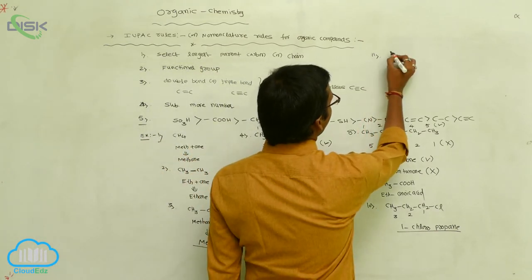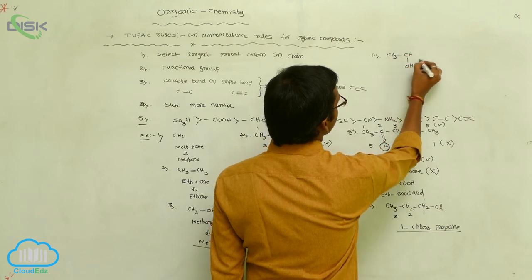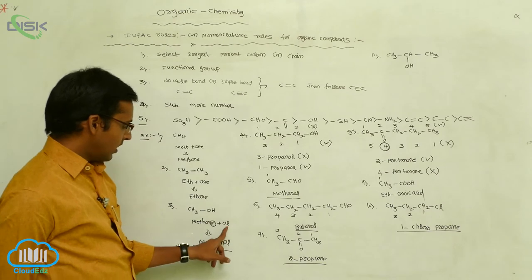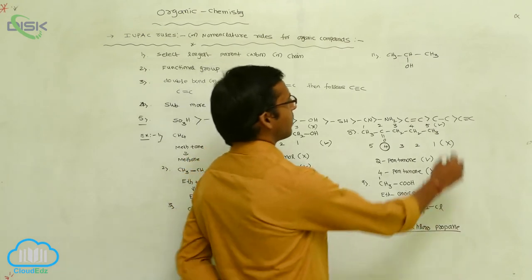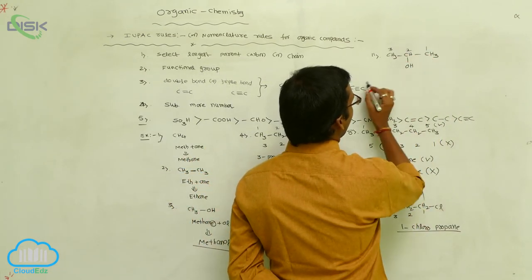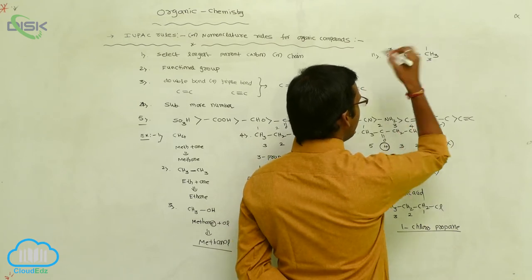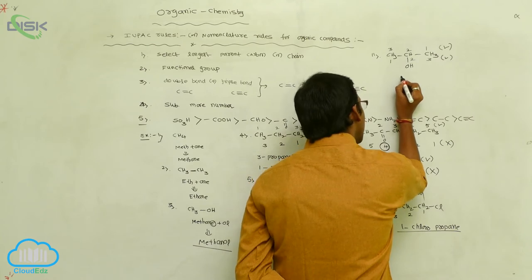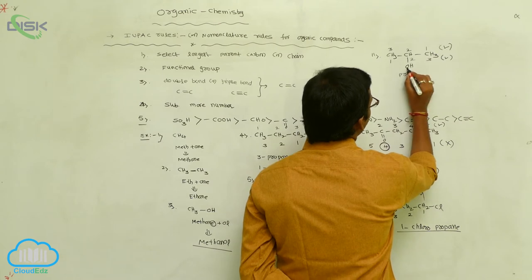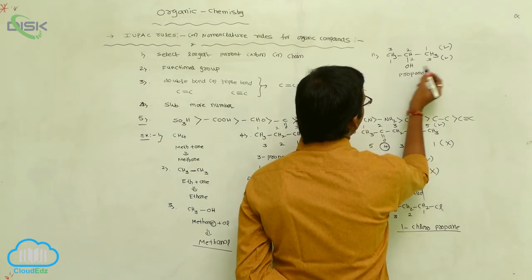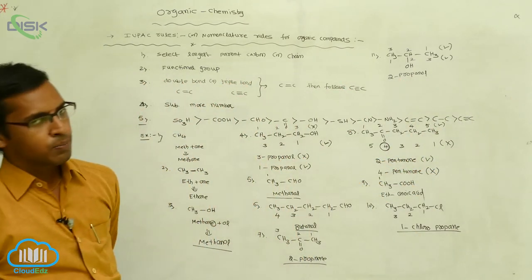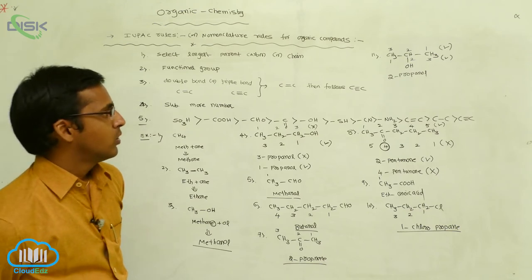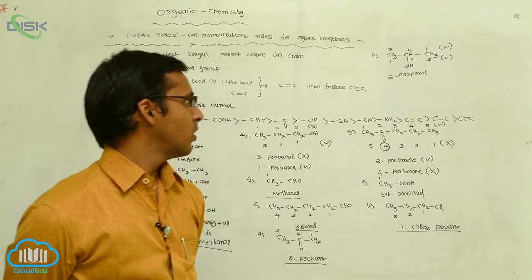Consider CH₃CHOHCH₃. Here, OH acts as a functional group. If OH is the functional group, the secondary suffix is '-ol'. Give the numbering: 1, 2, 3 — in any manner, the functional group gets position 2. Three carbons are present, so the root word is 'prop-'. OH is your alcohol group, giving propanol. This is 2-propanol. So 1-propanol and 2-propanol have the same molecular formula but differ in the position of the OH group.